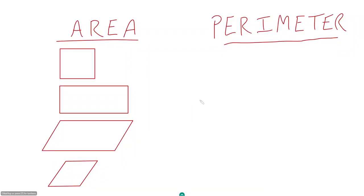The two most common things you will be asked to calculate for quadrilaterals are their area and their perimeter. Most people have done this before, but that does not mean they cannot create hard questions involving these things. So let's talk about quantifying each of these things for your different quadrilaterals.